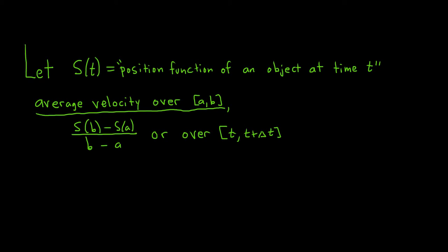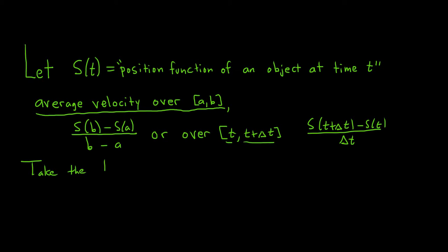On the bottom you subtract t from t + Δt, so the t's cancel and you just get Δt. Remember, we did this before when constructing the instantaneous rate of change. What you do is take the limit, and you get the derivative.